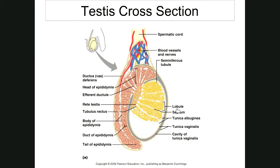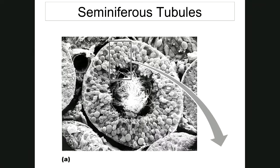The seminiferous tubules are long, highly coiled tubules occupying the lobules — these are the sites of sperm production. Here is a seminiferous tubule that's been cut; the sperm mature from the outside of the tubule toward the inside, with tails hanging into the lumen before being sloughed off. Because the tubule is all wound up and stuffed into the lobule, a single section may cut through the same tubule multiple times.